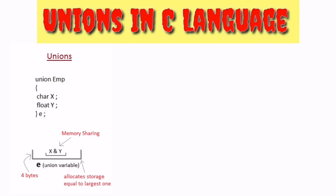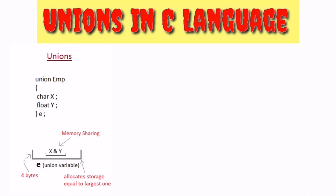For example, we define a union that has many members — character x and float y, along with other data types. Suppose we define the union here: we assign e.x equals to a value, then e.y equals to a value.